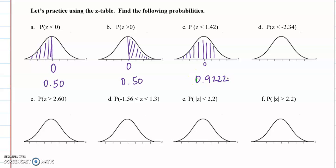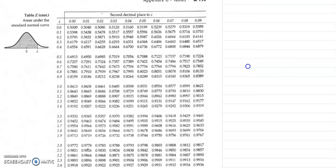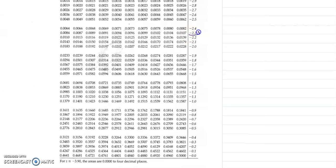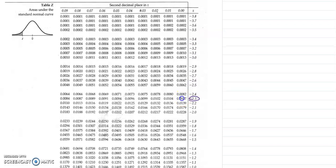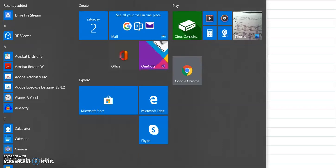Letter D, the probability that z is less than negative 2.34. So here's 0, negative 1, negative 2. We're talking this much right here. Now it's negatives and you need to find negative 2.3 and then go over 4 hundredths. So there's 0, 1, 2, 3, 4, 0.0096.